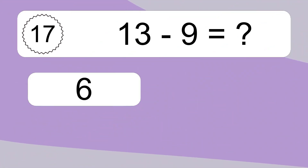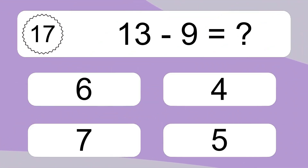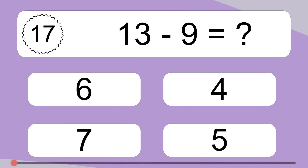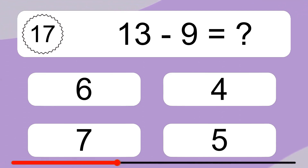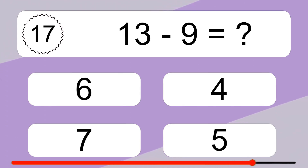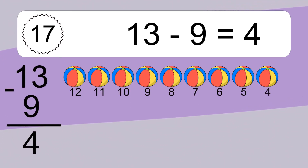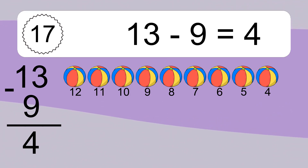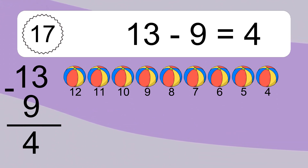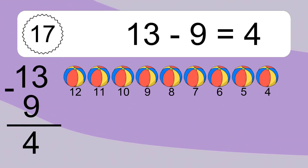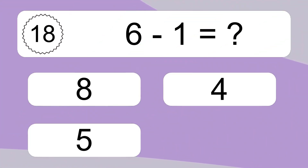13 minus 9 equals what? 13 minus 9 equals 4. Let's count it: 12, 11, 10, 9, 8, 7, 6, 5, 4.